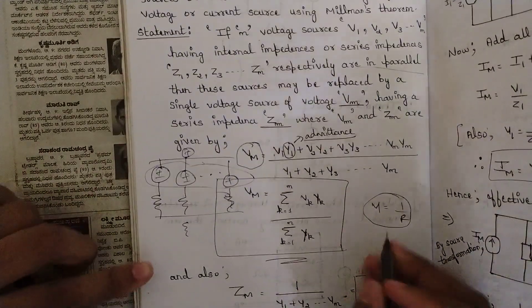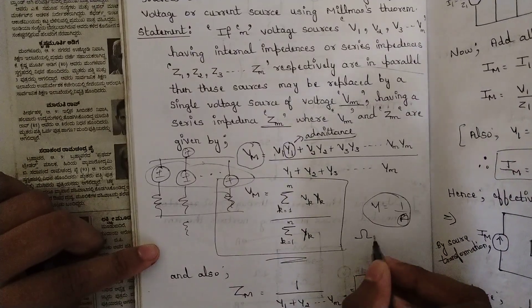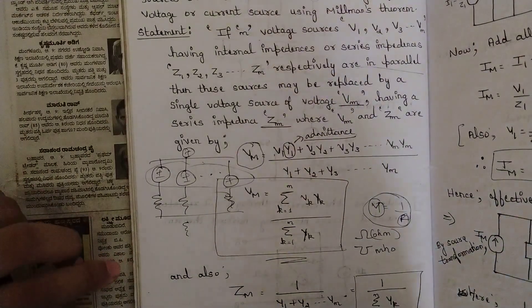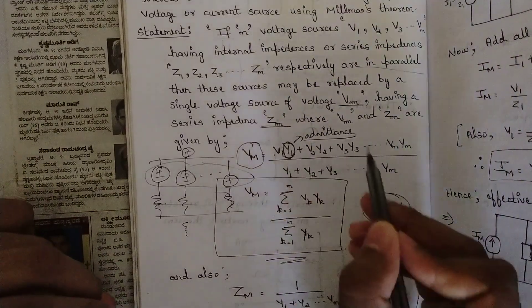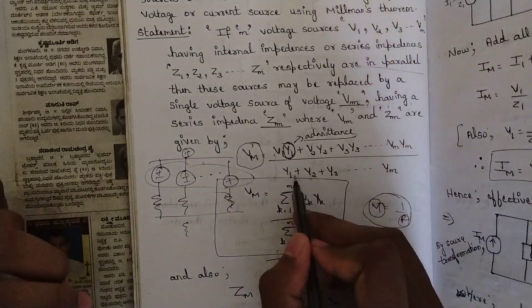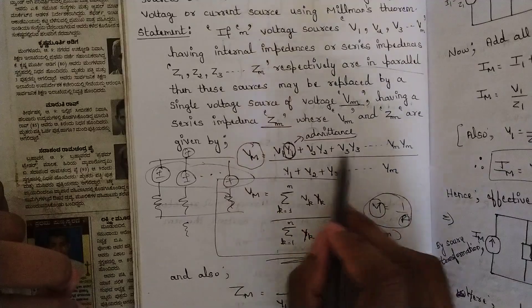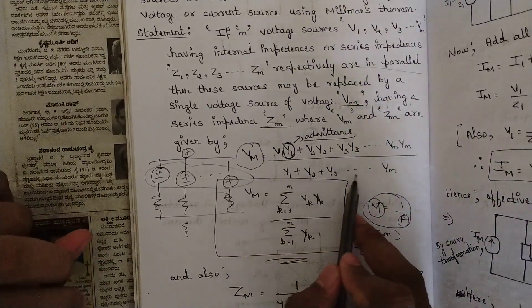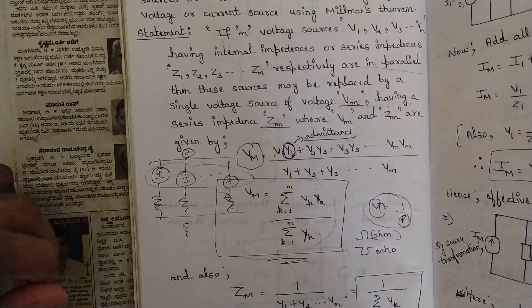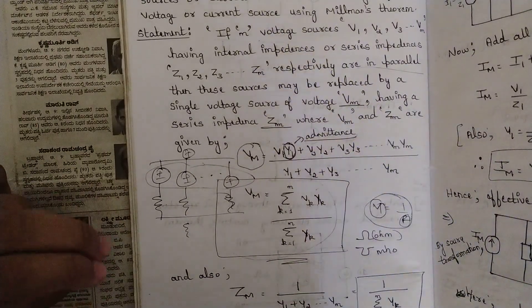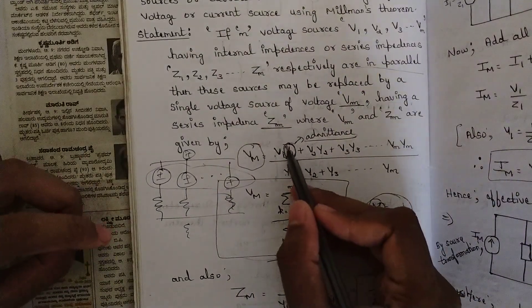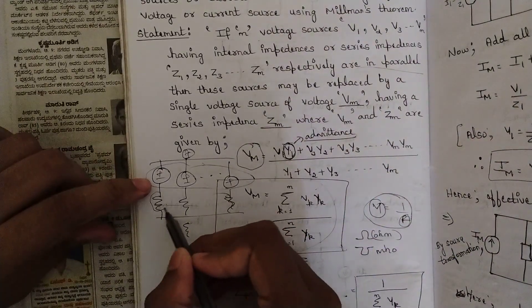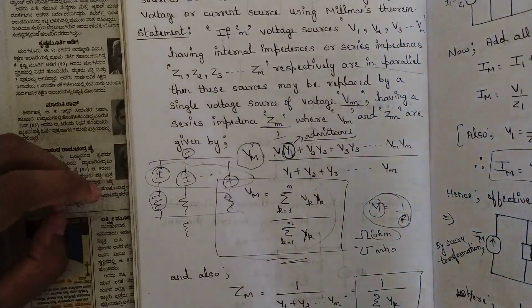Admittance is the reciprocal of resistance — Y = 1/R. The unit of resistance is ohm, and the unit of admittance is mho, which is the reverse. So Y is the admittance, the reciprocal of resistance. Therefore the formula for Vm is: (V1·Y1 + V2·Y2 + ... + Vn·Yn) / (Y1 + Y2 + ... + Yn). You should not get tense seeing 'admittance' — just write one divided by the resistance value and solve.